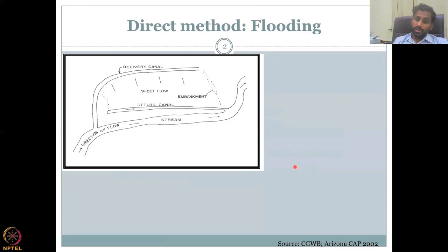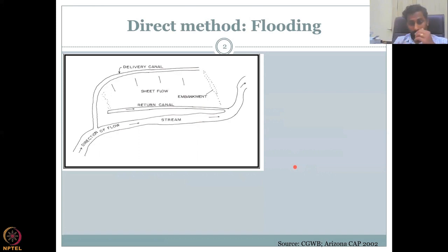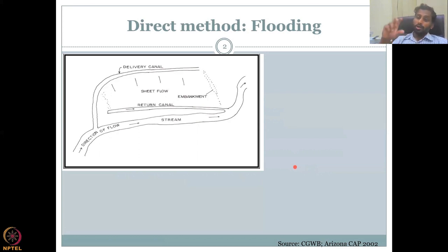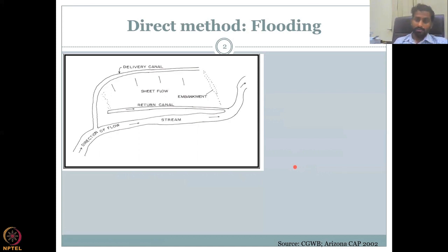Rainfall is kind of a direct method, but it doesn't give enough time. The whole point is increasing the time. Flooding means ponding of water on top of the surface, and flooding comes in different levels. You can have flooding to your ankle, which is called a massive flood in Singapore because the cars are very expensive.